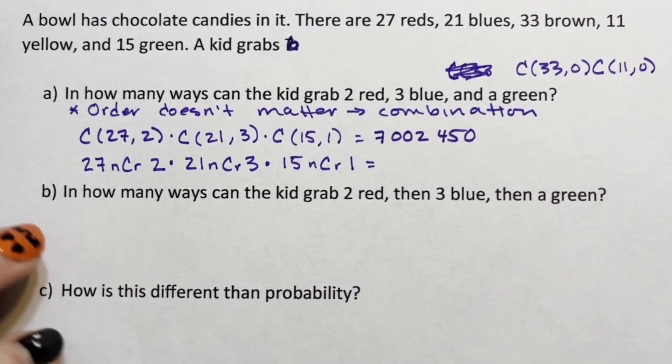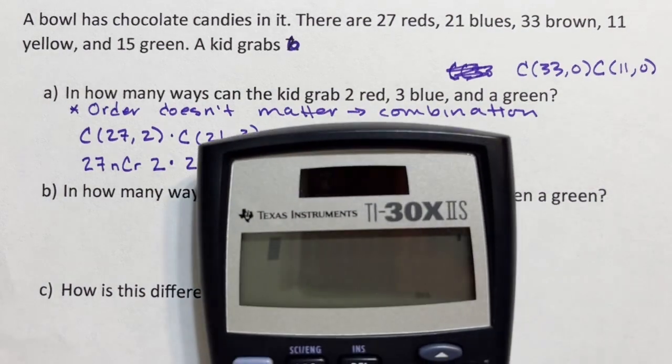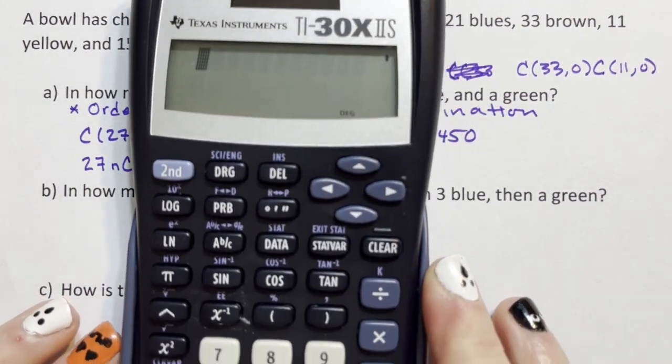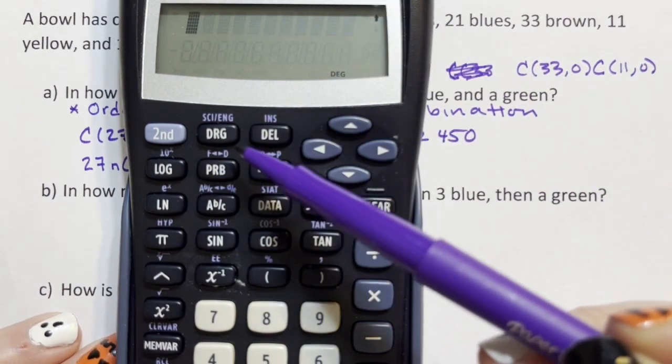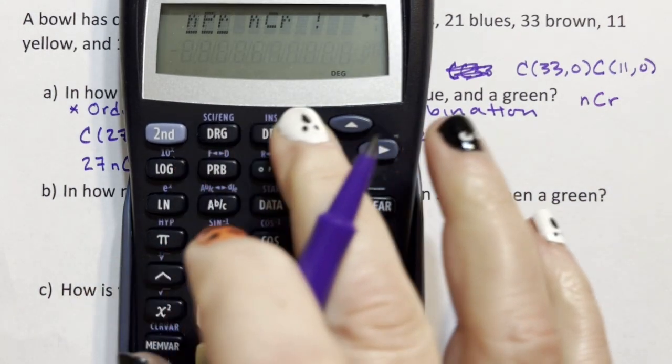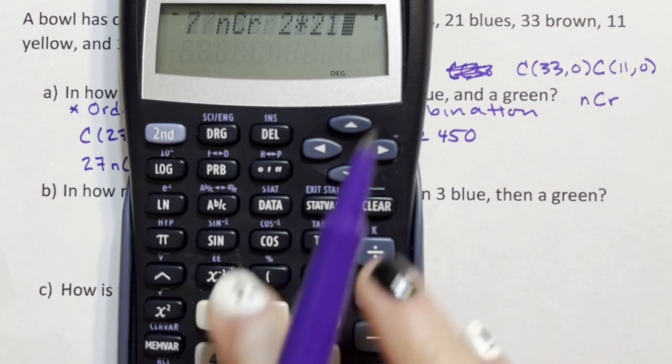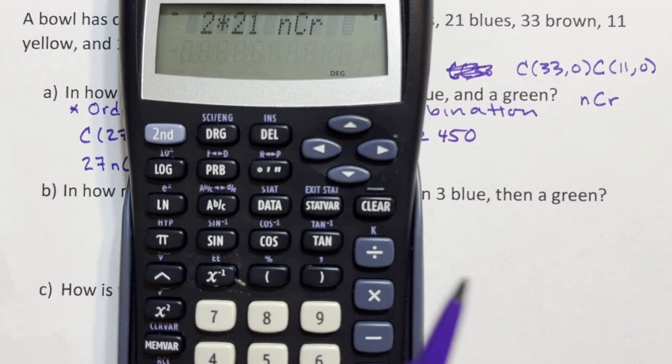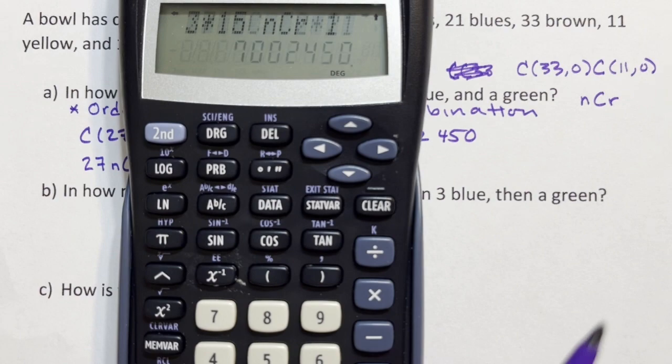A lot of students use and a lot of schools love this very popular calculator. For this calculator it's in the probability menu. You would type 27 probability go over to the ncr equals 2 times 21 probability move over equals 3 times 15 probability move over equals 1 equals, and once again we have 7,200,450, same answer.